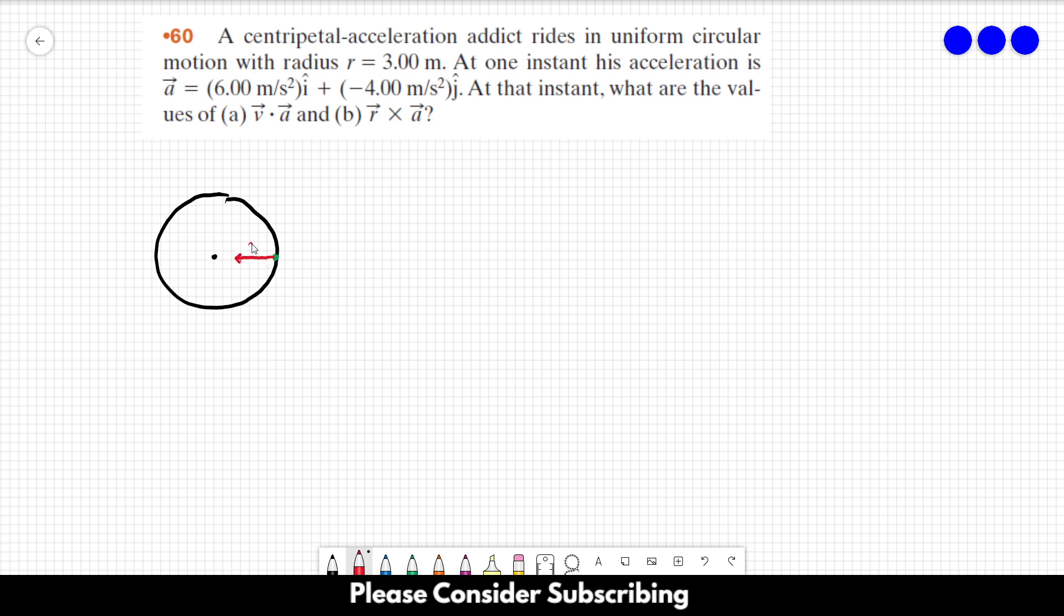It always points to the center if it is the centripetal acceleration. If it is rotating counterclockwise, its speed would point in this direction or else it would point to this direction. And vector R is the vector that connects the center of the motion to the particle.